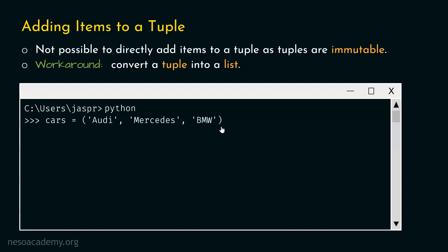We can do that with the help of the list() method. Let's type: temp = list(cars). With this method, we can convert this tuple into a list, and the temp variable will point to that list. Let's hit enter. At this point, we can be sure that our list is created.